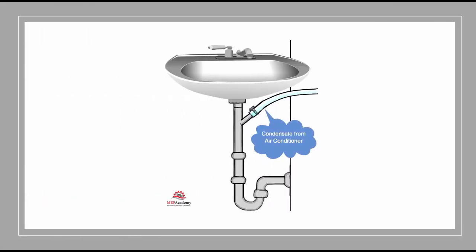Here is an image of a connection to a tailpiece for a plumbing fixture. Remember, it has to be in the same space as the air conditioning coil.